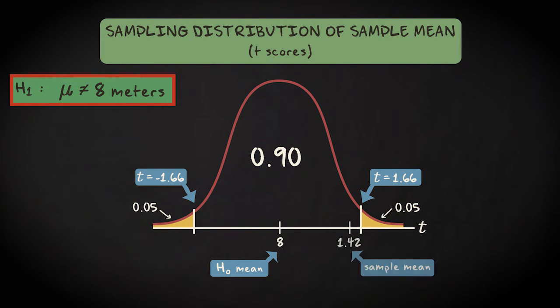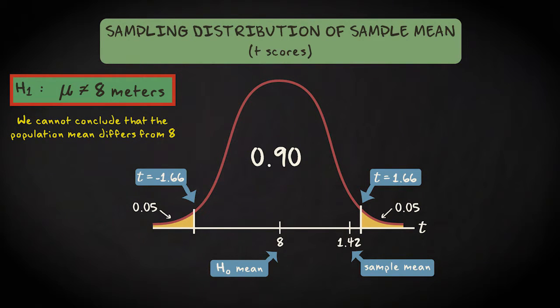The test statistic of t equals 1.42 is not located in the rejection region, so we do not reject the null hypothesis. This means that based on an alpha of 0.10, we cannot conclude that the population mean differs from 8.